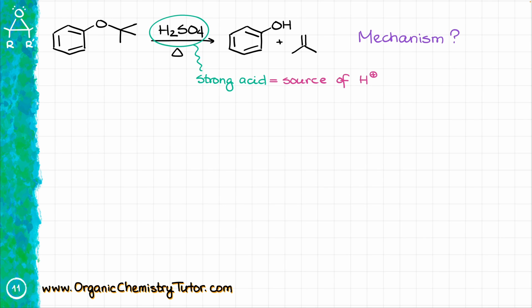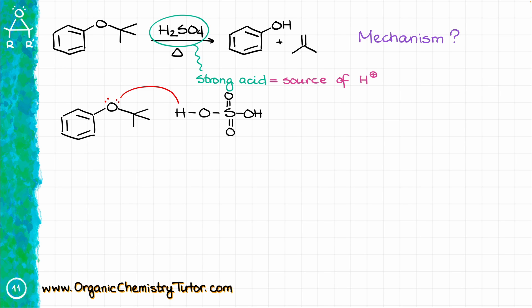But before I go there, let's redraw my molecules like that. As I've mentioned, I'm going to start by protonating my oxygen. I will show the electron pairs on my oxygen, and I will grab that proton of sulfuric acid. In the course of this proton transfer reaction, I'm going to get a protonated intermediate that looks like this.